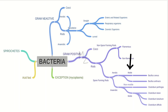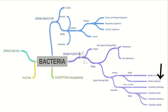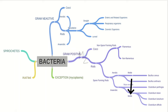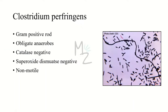The aerobic motile rods — for example, Bacillus cereus — and the non-motile aerobic rods — for example, Bacillus anthracis. The non-motile anaerobic rod is Clostridium perfringens, which we are going to talk about in today's video. The motile anaerobic rods are Clostridium tetani, Clostridium botulinum, and Clostridium difficile.